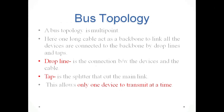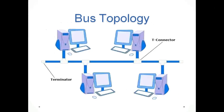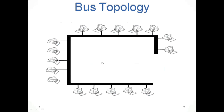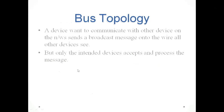The bus topology allows only one device to transmit at a time, and a terminator is used at each end. T-connectors are used to connect a node from the main line. In this picture of bus topology, there is a common bus with terminator, sender, and receiver. At any time only one system can send a message. A device wanting to communicate sends a broadcast message onto the wire; other devices see the message but only the intended device accepts and processes it.